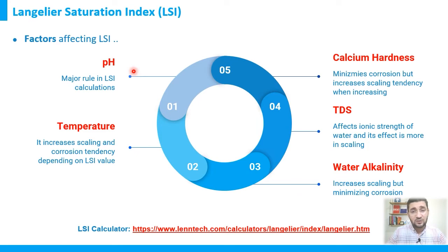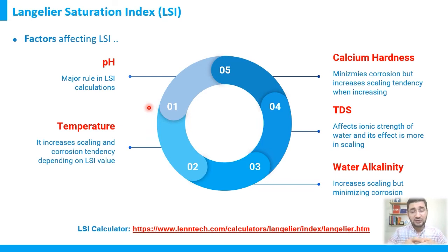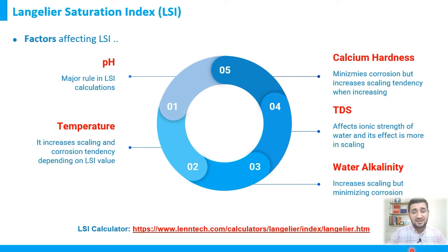pH plays a very important role in the LSI equation. When pH goes toward acidic values — from 7 toward zero — we expect lower LSI, possibly in negative values, meaning no precipitation tendency. The second parameter is temperature, which plays an important role in both scaling tendency and corrosivity. For calcium carbonate, at elevated temperatures — 40, 50, 60, 70°C and above — scaling tendency increases. This is well known: calcium carbonate scaling increases with elevated temperatures.